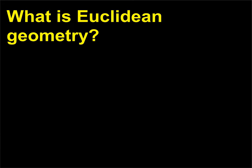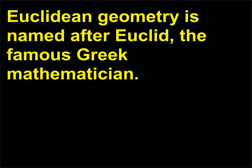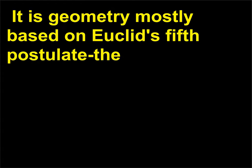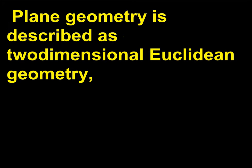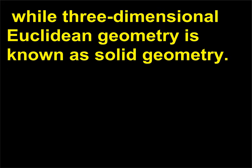What is Euclidean geometry? Euclidean geometry is named after Euclid, the famous Greek mathematician. It is geometry mostly based on Euclid's fifth postulate — the parallel postulate — and is sometimes called parabolic geometry. Plane geometry is described as two-dimensional Euclidean geometry, while three-dimensional Euclidean geometry is known as solid geometry.